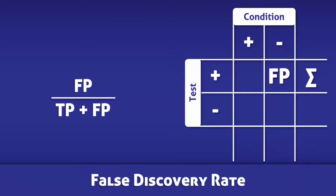Once more, the false discovery rate is calculated by dividing the number of false positives by the total number of positive tests.